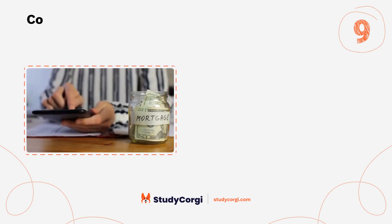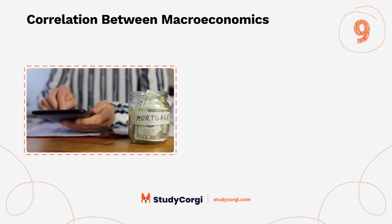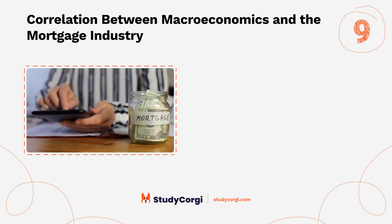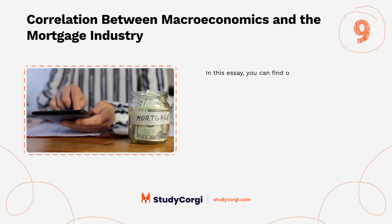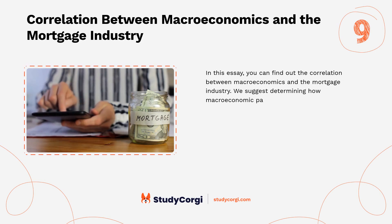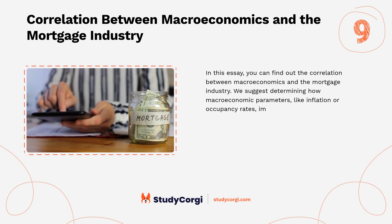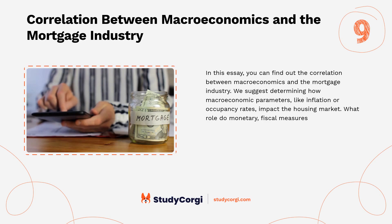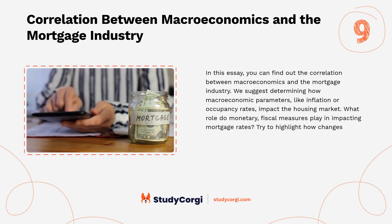Topic nine: Correlation between macroeconomics and the mortgage industry. This essay explores the correlation between macroeconomics and the mortgage industry, determining how macroeconomic parameters like inflation and occupancy rates impact the housing market. It examines the role monetary and fiscal measures play in affecting mortgage rates, and highlights how changes in this context affect supply and demand.